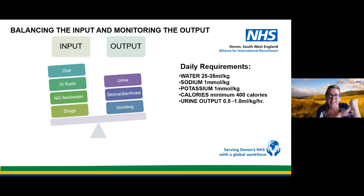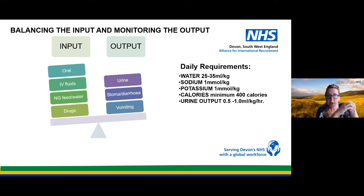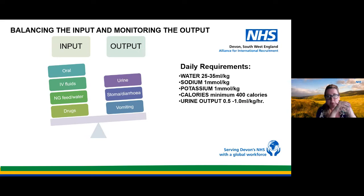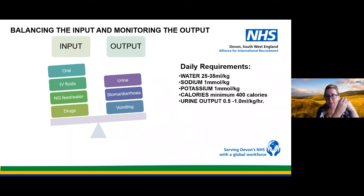Balancing input and output is a real balancing act. Input is everything we put into the body: everything taken by mouth, IV fluids, any drips, NG feeds, and any drugs. Remember, fluid is calculated as anything that is liquid at room temperature — so ice cream counts because it's liquid at room temperature. Output is everything coming away from the body: urine, bowel movements including stoma bags, diarrhoea, and vomiting, as well as other secretions such as excess sputum.